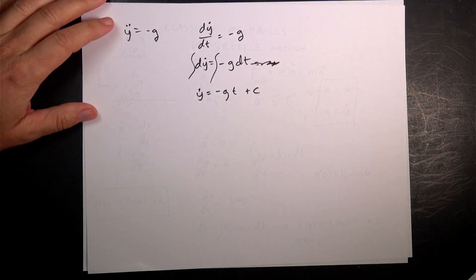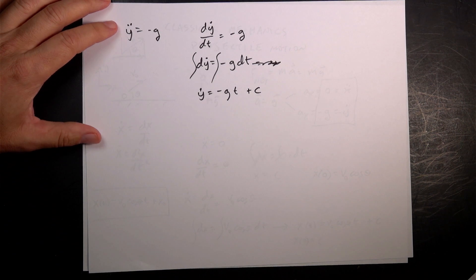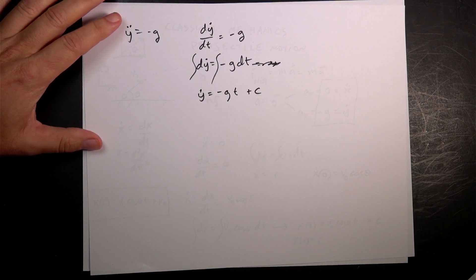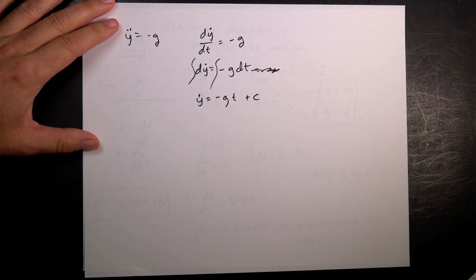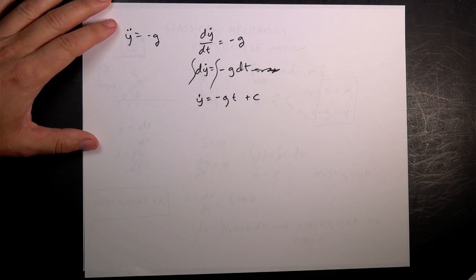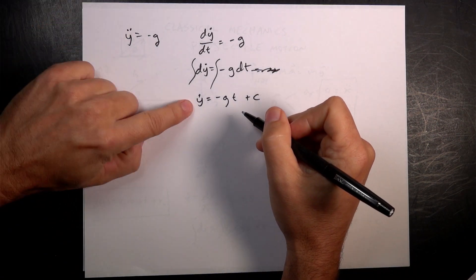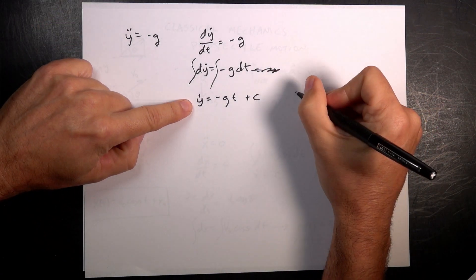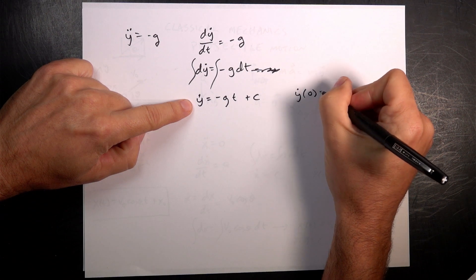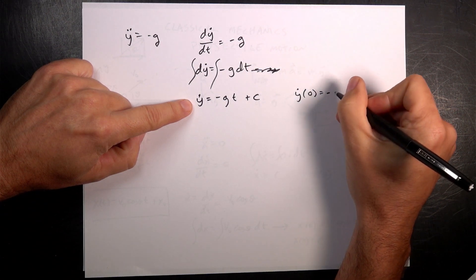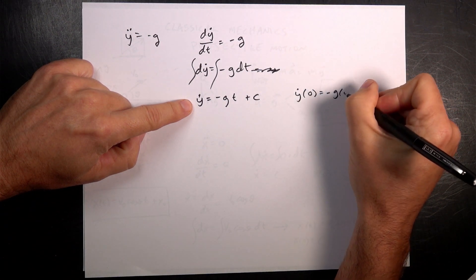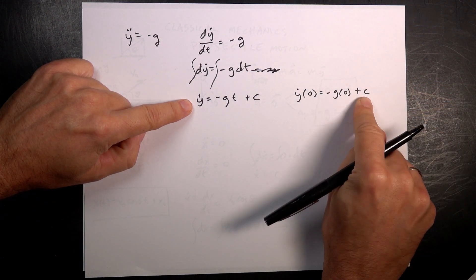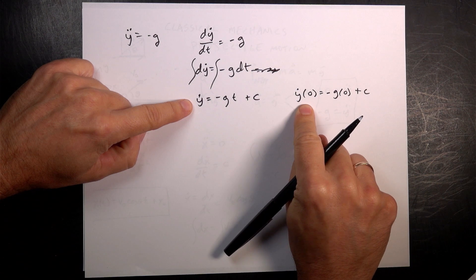Yes, I'm using the same c, and that's a terrible thing and I'm a terrible person, but I've accepted who I am. I can say y dot at time t equals zero is going to be negative g times zero plus c, so c has to be the initial y velocity.